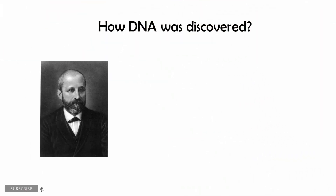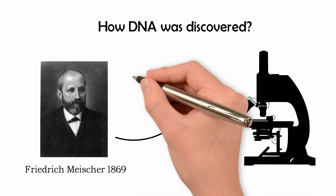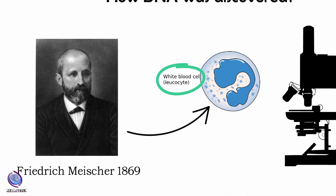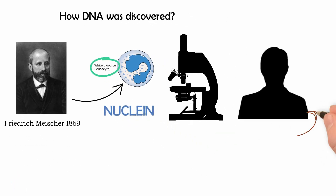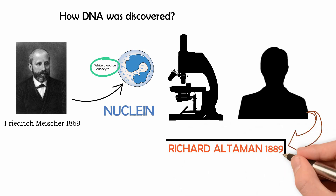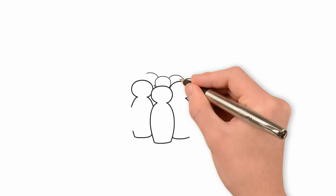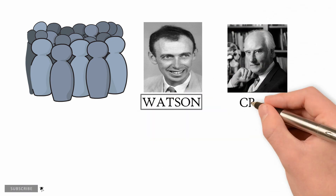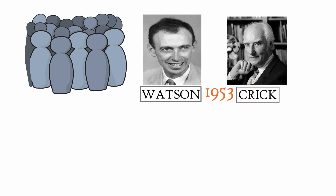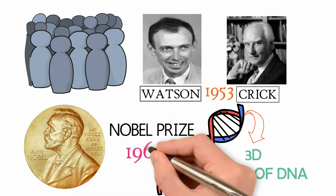DNA was discovered in 1869 by Swiss researcher Friedrich Meister, who was originally trying to study the composition of lymphoid cells. DNA was named 'nuclein' because it was isolated from the nuclei of cells. Later in 1889, Richard Altmann discovered that nuclein had acidic properties and it was renamed nucleic acid. After many years of discoveries by different scientists, in 1953 Watson and Crick built a 3D model of DNA which satisfied all the details. Watson and Crick were awarded the Nobel Prize in 1962.